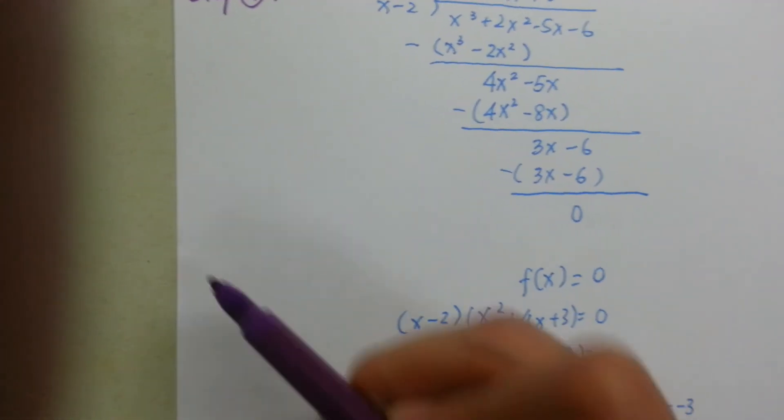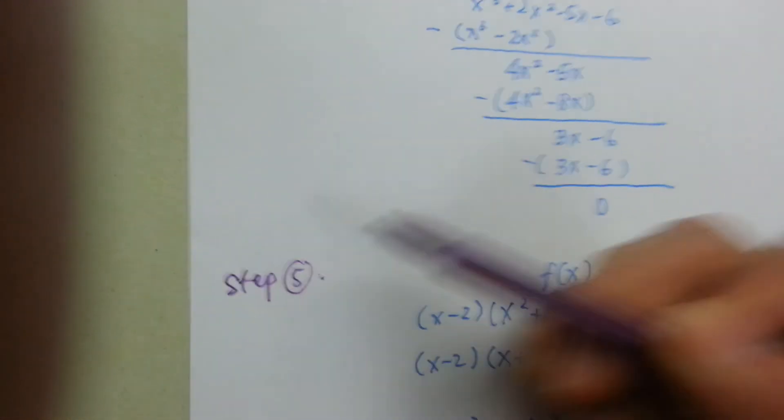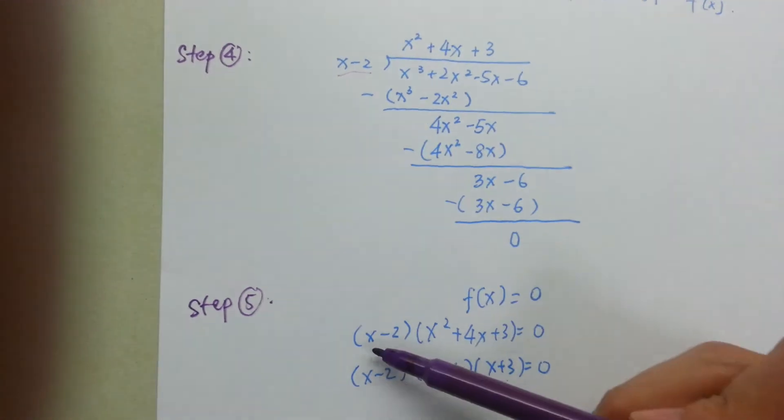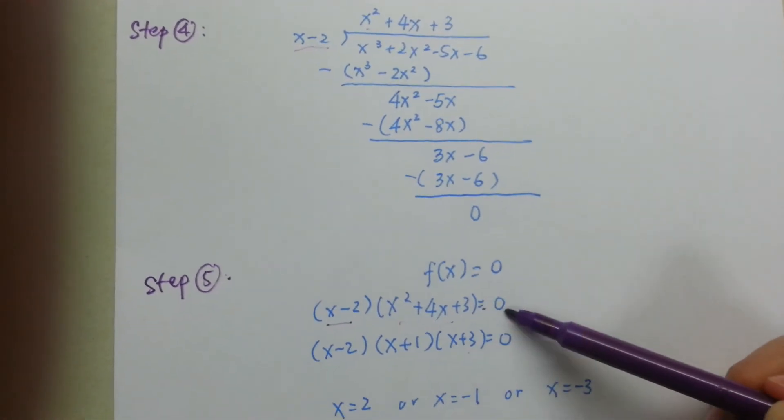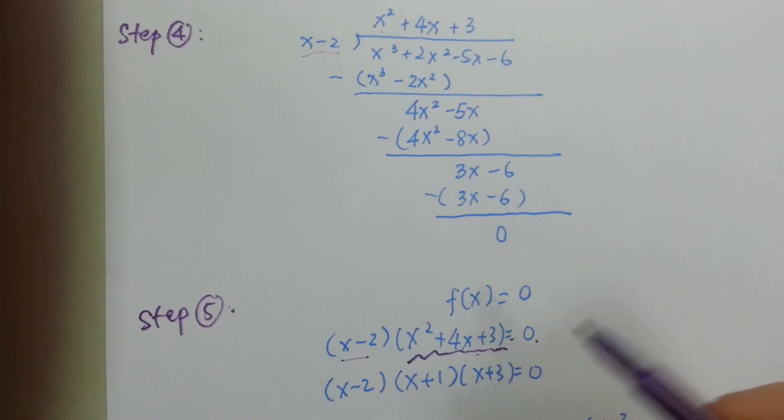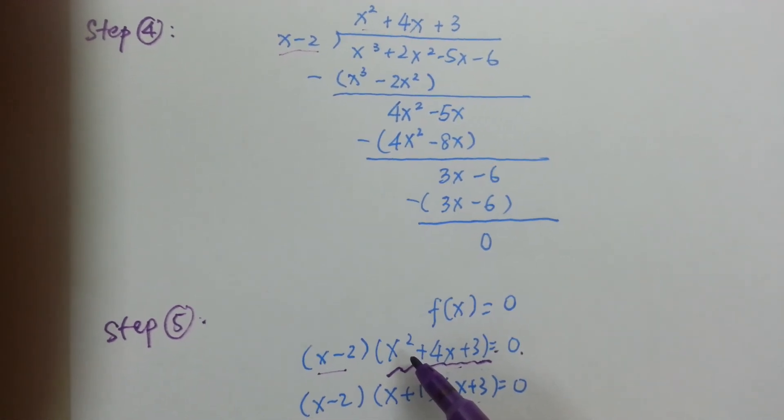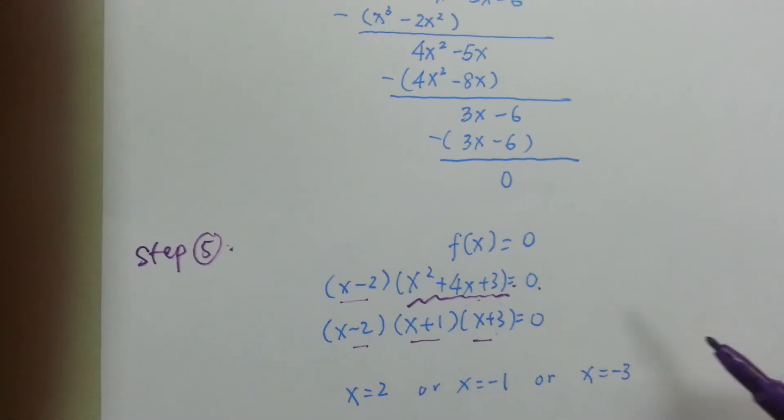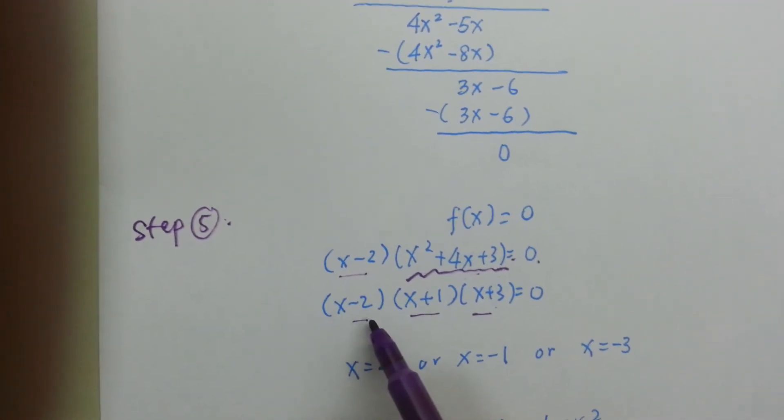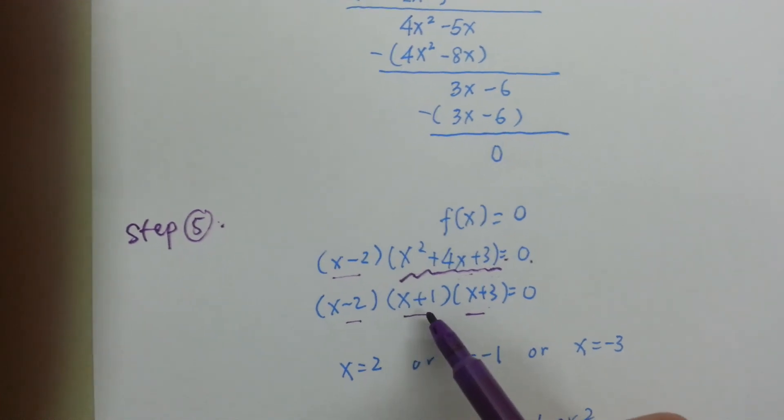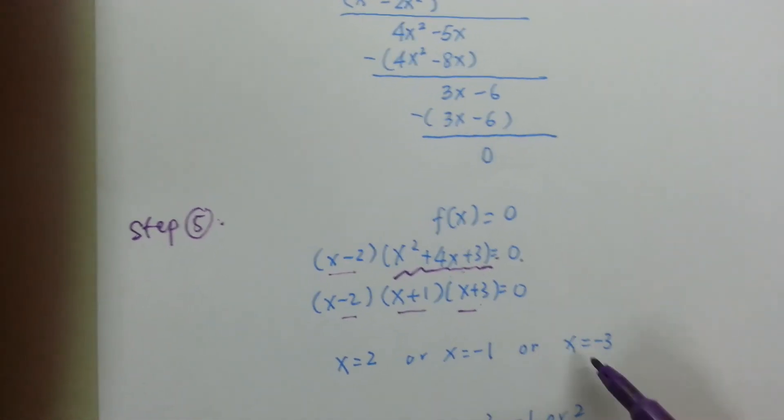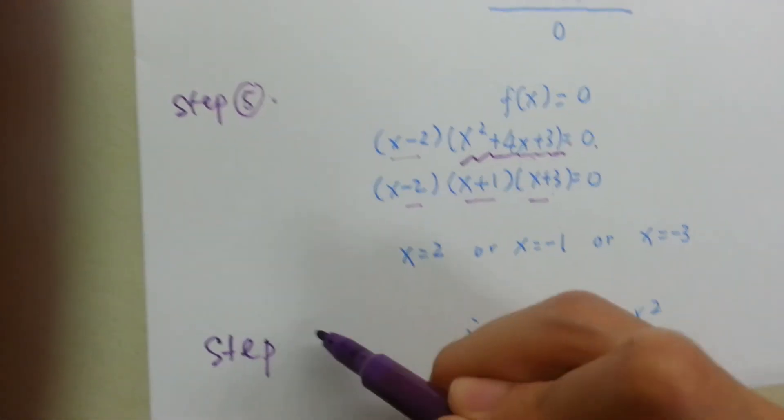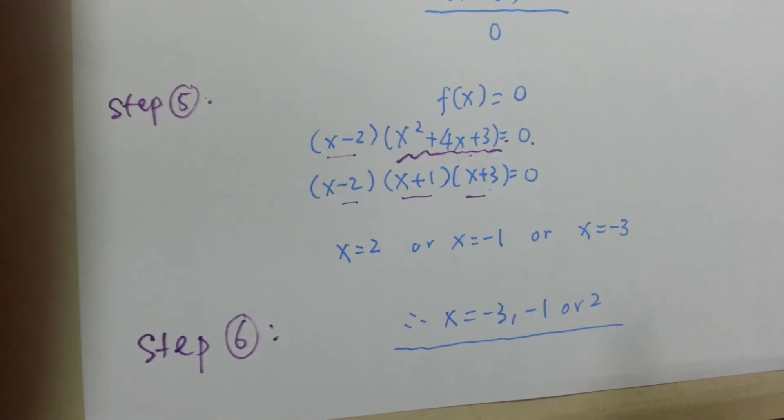Then on step 5, we remind ourselves of what the question wants us to solve, that is f(x) = 0. Using my long division, I will write the divisor x-2 first, and I'll write the quotient next equals to 0. If possible, I will try to factorize the quadratic into linear factors again. So when I have 3 linear factors equals to 0, they are each equal to 0, because anything times 0 will give you 0. And then finally, I conclude my answers by writing them in ascending order and I underline it.